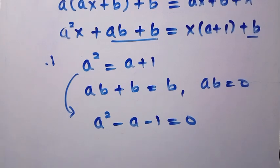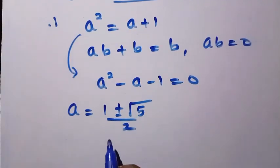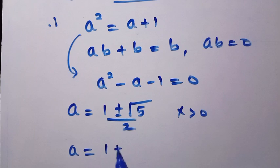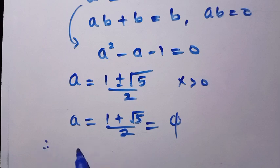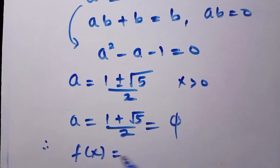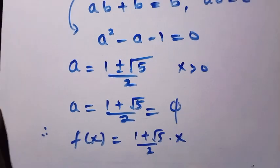Just as with k² = k + 1 from Method 1, solving quadratically gives a = (1 ± √5) / 2. Since x > 0 we neglect the negative value, so a = (1 + √5) / 2, which is the golden ratio φ. Therefore f(x) = ax + b = ((1 + √5) / 2) · x, since b = 0.